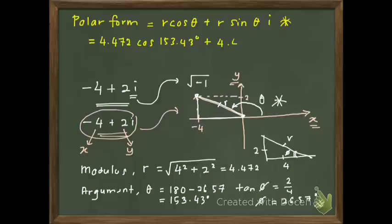The equation will be 4.472 cos 153.43 degrees plus 4.472 sin 153.43 degrees i. When you use your calculator and simplify this, the answer will be negative 4 plus 2i.